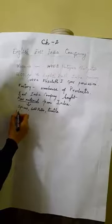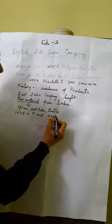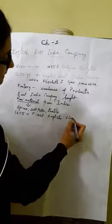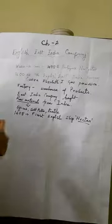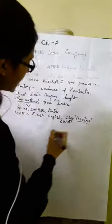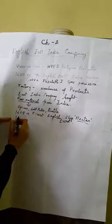In 1608 CE, the first English ship, Hector, came to India. They landed in Surat but could not set up their trade relation in India because the Portuguese were already there. Due to Portuguese antagonism, the ship Hector had to return.